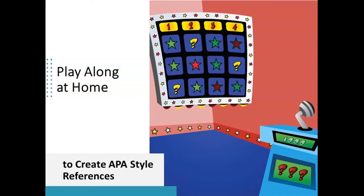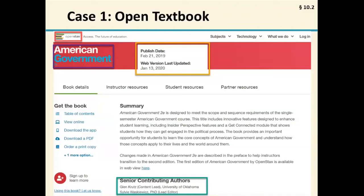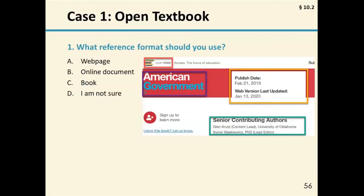This brings us to the conclusion of our presentation where we want you to play along and create APA style references. We're going to look at three cases together. The first case is an open textbook — a screenshot of an open textbook website with colored boxes drawn around the four elements: authors, date, title (American Government), and source. Our first question, shown as a poll on your screen, is: what reference format should you use for an open textbook? A, web page; B, online document; C, book; or D, I'm not sure. The correct answer is C, book. Open textbooks are cited like books and use the italic title format pattern. Lots of works you might not think are books actually are — reference works like dictionaries and diagnostic manuals are cited like books.